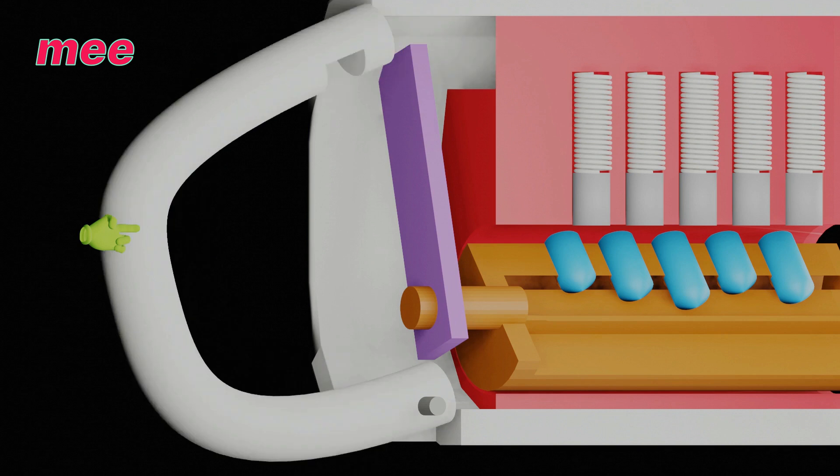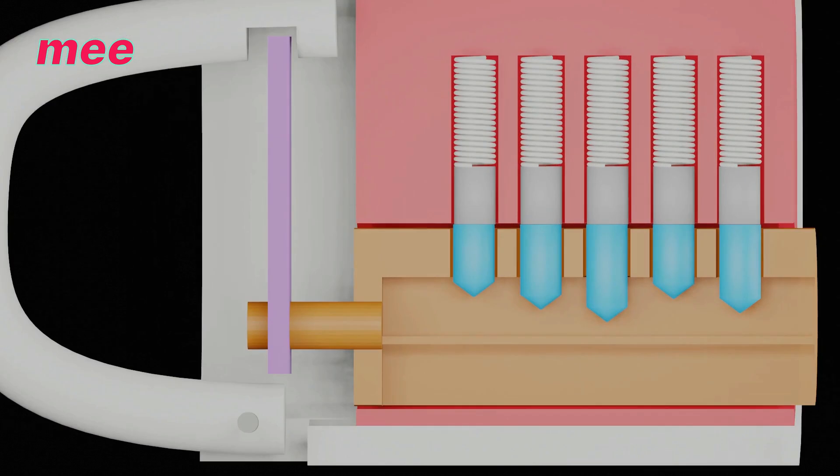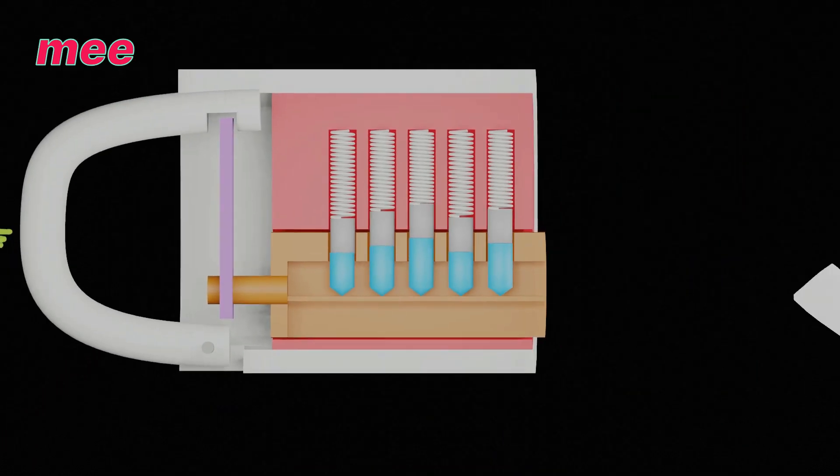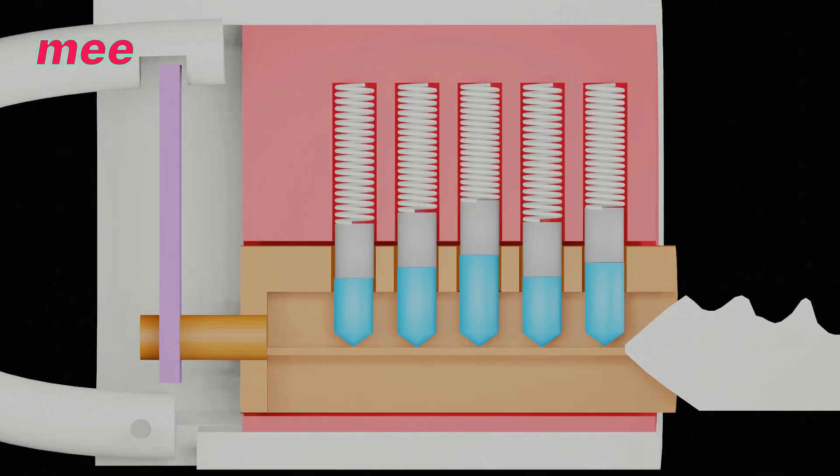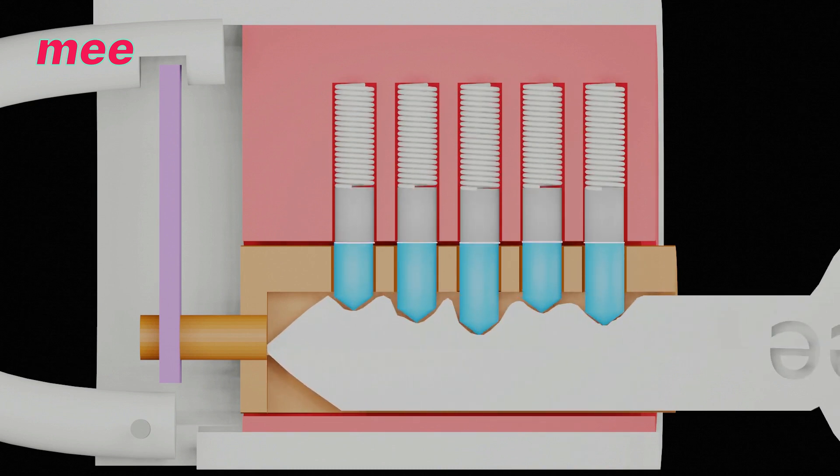and the shackle becomes free and gets out of the lock. Now see how the key makes it possible to open the lock. When the key is inserted, it pushes all the pins upward and makes the gap between pins...